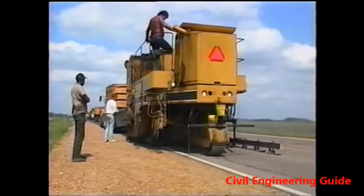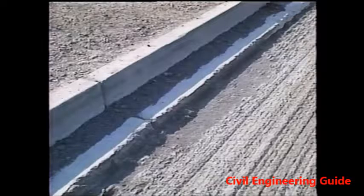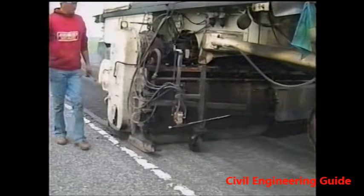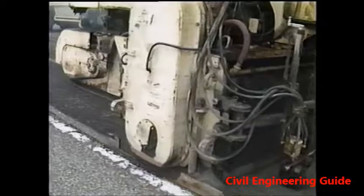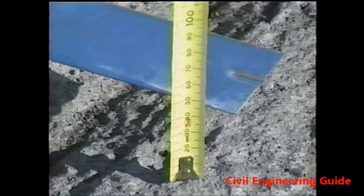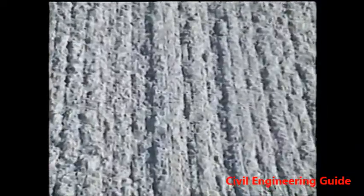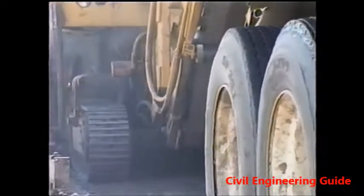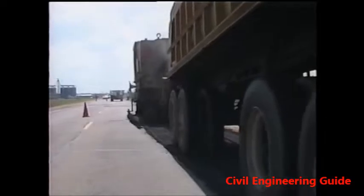Along with pothole repair and pre-leveling, many projects specify milling. Milling is often used in urban areas so that the new pavement will match up with existing manholes and curbs. This procedure is also effective in eliminating wheel ruts. When milling is required, your first major concern is that the pavement is milled to the proper depth. Also be sure that the milling equipment does not tear or rip the surface. In addition, make sure that the contractor takes appropriate measures to control dust and to maintain proper drainage from the pavement.